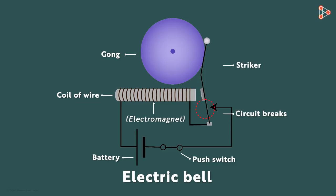And when the circuit breaks, the current stops flowing. So this electromagnet gets demagnetized after which the soft iron goes back to its start position.